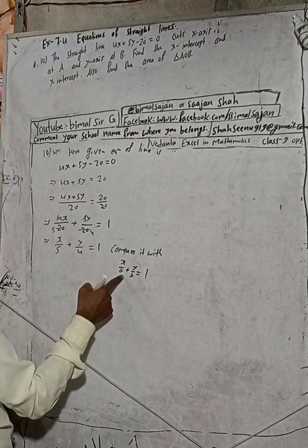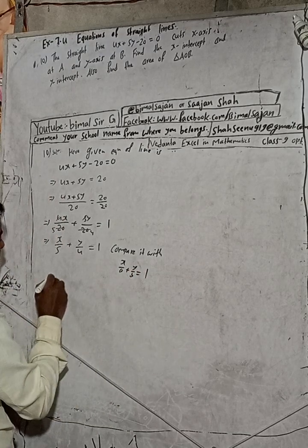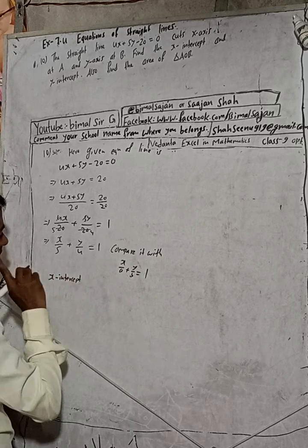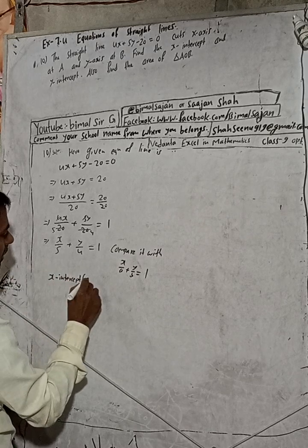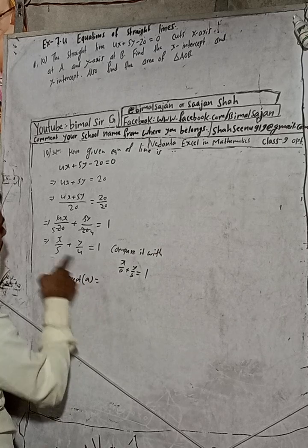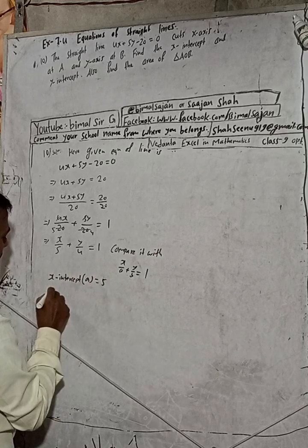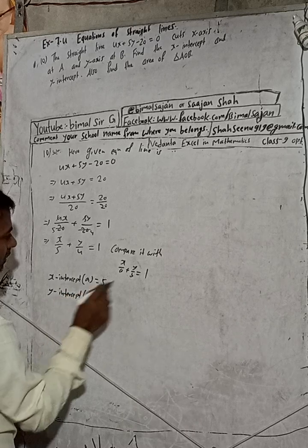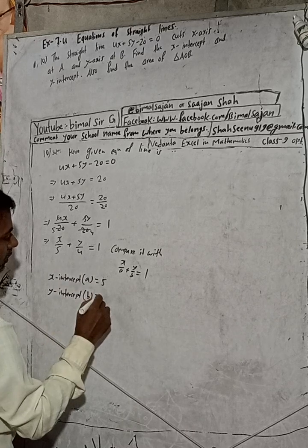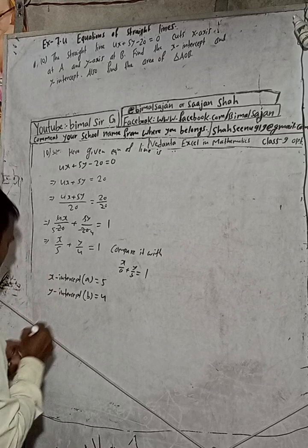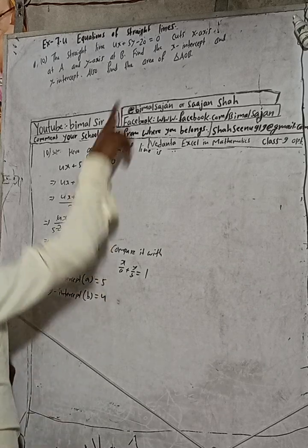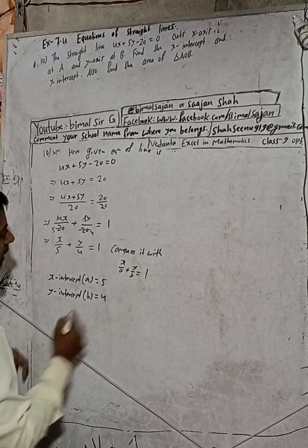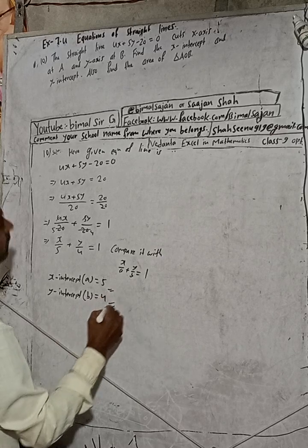Comparing, so this is our x intercept, this is our y intercept. x intercept, that means indicated by a, is equal to 5, and y intercept, indicated by b, is equal to 4. Now the question is there: find the x intercept and y intercept, so we got here x intercept, y intercept. This is our answer.